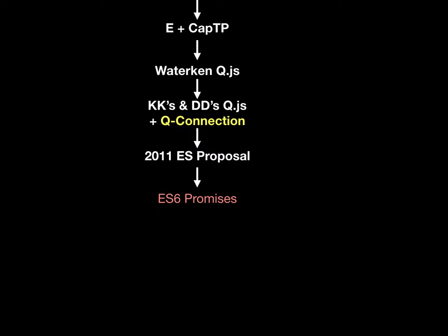Waterken brought this to both Java and JavaScript and was used inside HP, including at scale. As part of that, Tyler Close created the original Q-JavaScript API. That Q-JavaScript API led to the work by Chris Kual and Dominic Denicola on the current Q API, which really directly inspired JavaScript promises. The original promise proposal goes back to 2011, very much trying to follow the pattern of Q.